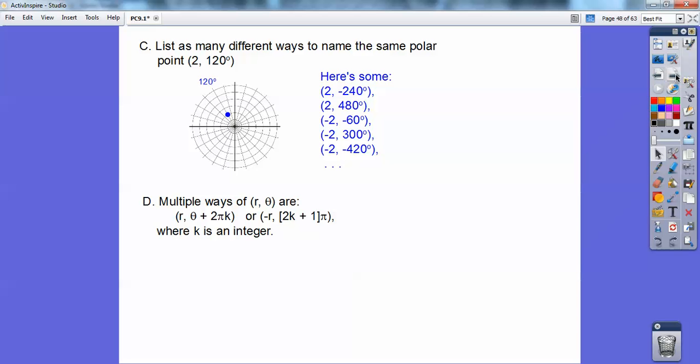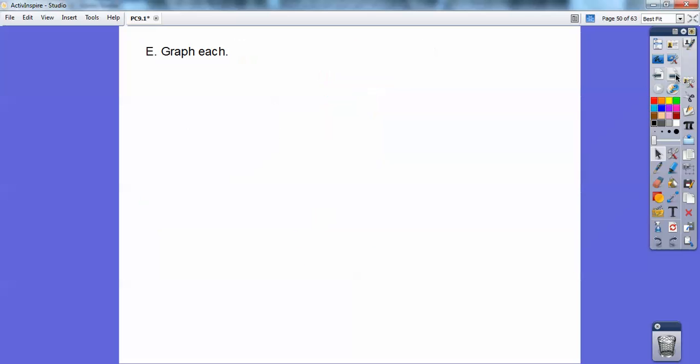There's infinitely many more. In general, you guys, r with theta plus 2 pi k and negative r with 2 k plus 1 pi, where k is any integer, will give you the multiple ways. And the 2 k plus 1 just ensures it's going to be an odd number right there.